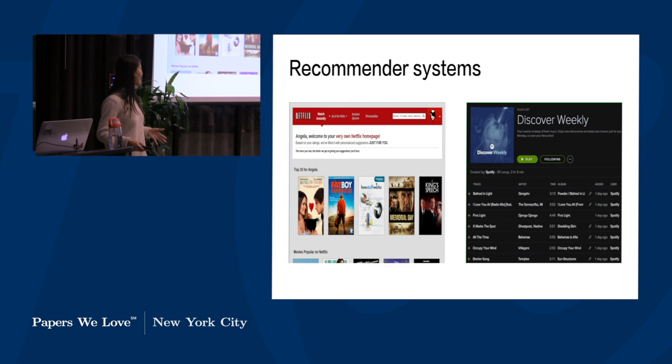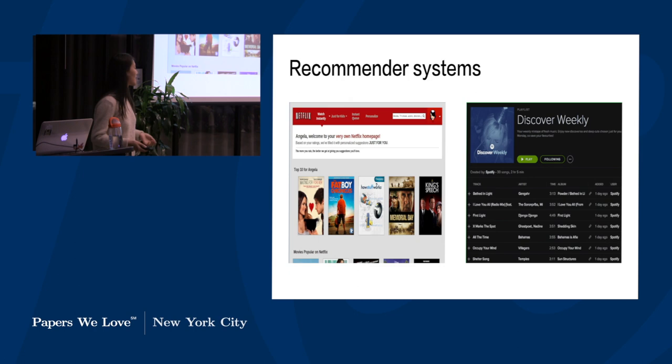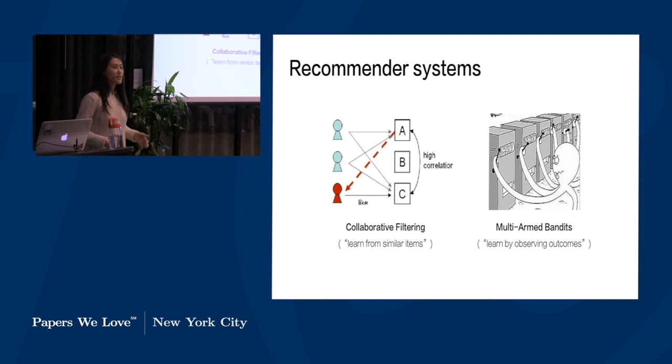So why are we talking about this at all? You might have noticed that the world has become increasingly personalized and you're getting recommendations for everything in your daily life. If you go onto Netflix, you'll get 10 movies recommended that they think you'll like, or if you listen to Spotify, it'll recommend music based on your past listening history. So how are these recommender systems implemented? Collaborative filtering is kind of the one everyone thinks of.